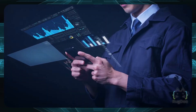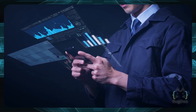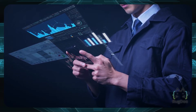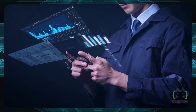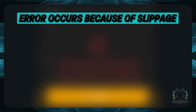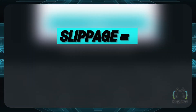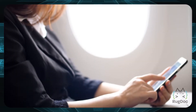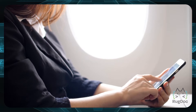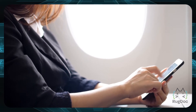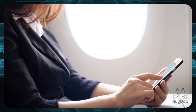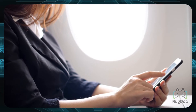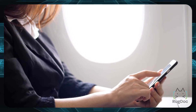So what is slippage? Pretty much anyone who has exchanged crypto on a decentralized exchange has faced the error you saw before. This error occurs because of slippage, and slippage happens when there is a difference between the initial cost of a trade when it is placed and the actual cost when the order is executed. For example, I might place an order for 100 super coins at $1 per super coin, but before it has a chance to be executed, the price might jump to $2, thereby generating a slippage error.